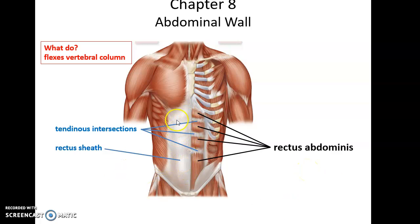There is also a thick sheet of connective tissue that goes all the way around the rectus abdominis called the rectus sheath.